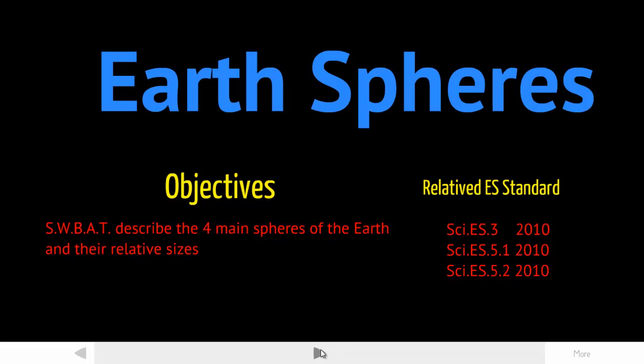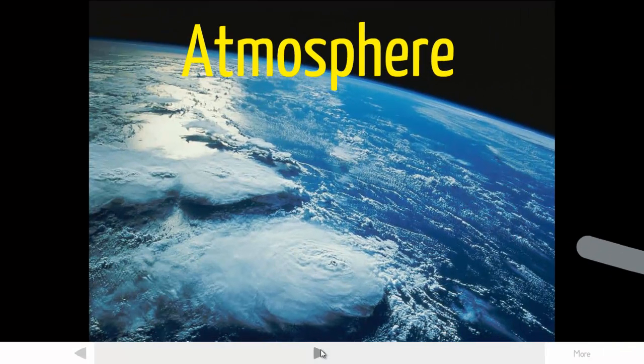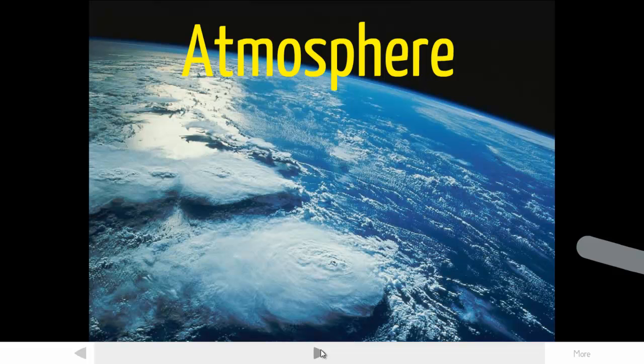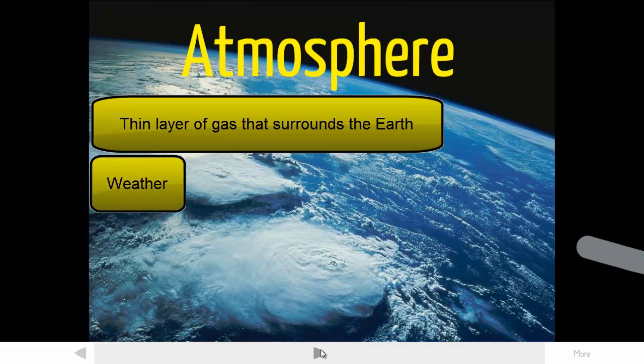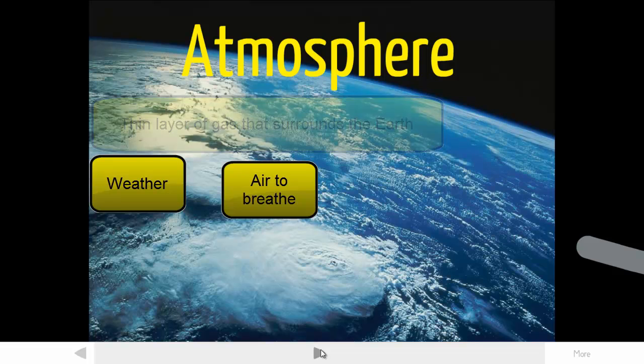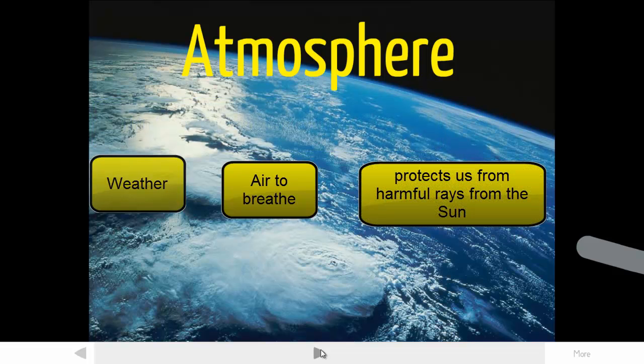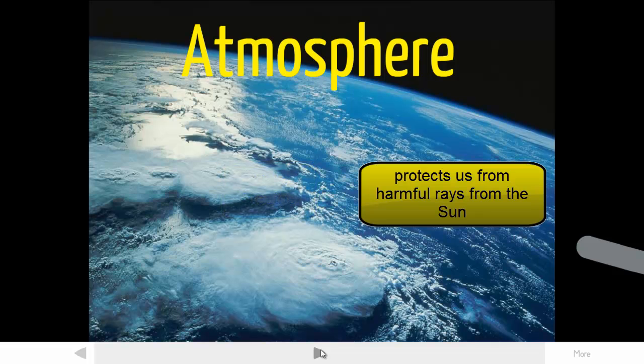So let's just jump right into the spheres. These are all interactive, so they're not independent of one another, they interact, one can affect the other. And the first one we're going to look at here is the atmosphere. The atmosphere is just that very thin blanket of gas that surrounds the Earth. It contains all the weather, it allows us to breathe, and it protects us from harmful rays from the sun.